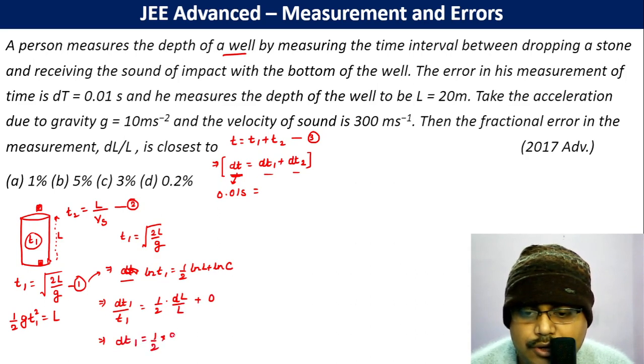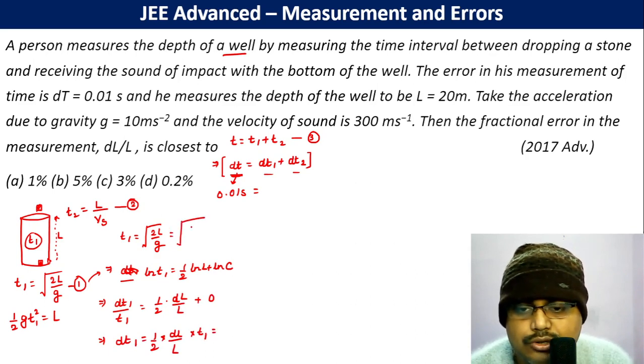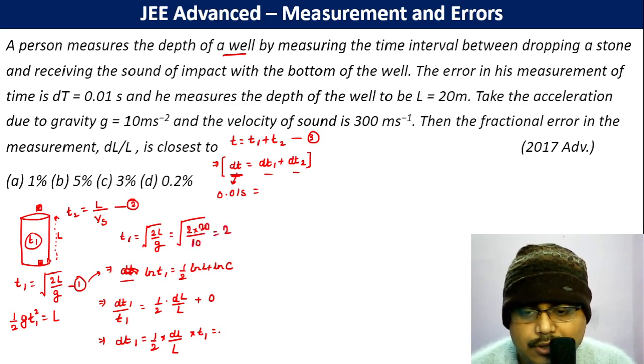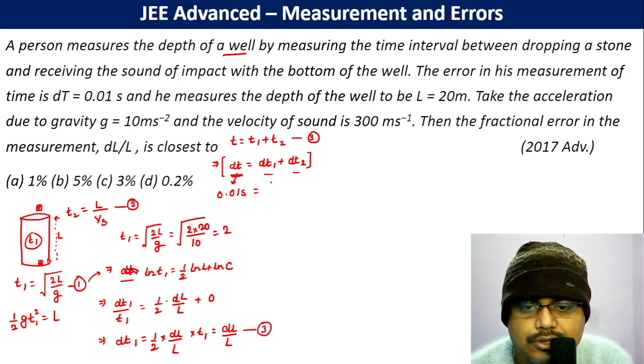Now what's t1? t1 is sqrt(2×20/10) which is 2. So this is going to be actually (dL/L)/3. So dt1 is dL/L divided by 3.